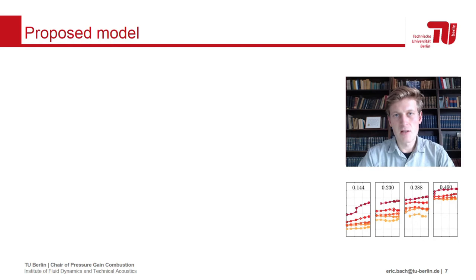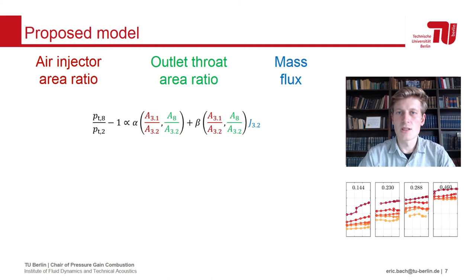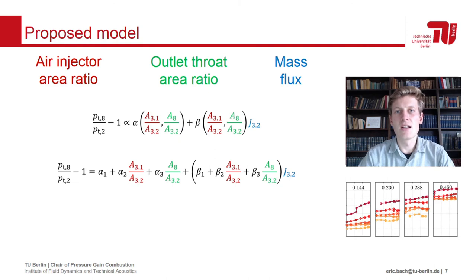Based on these observations, we propose a model that captures the effects of varying injector area ratio, varying outlet throat area ratio, and the propellant mass flux. The model should further be linear in all terms. Higher-order models are possible, but their predictive capabilities are less confident considering the trends presented earlier. We will split both alpha and beta into three parts: an offset and a linear relation to the respective area ratio. We then end up with a total of six coefficients that can be determined, for example, with an iterative least squares estimation.